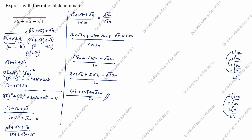This is the answer for the first method. Now we will see the second method. What is given? 1 divided by root 6 plus root 5 minus root 11. This time we will take root 6 as 'A' and root 5 minus root 11 as 'B'.